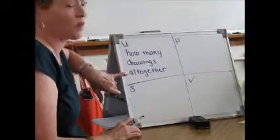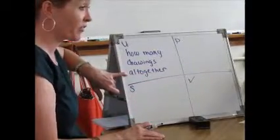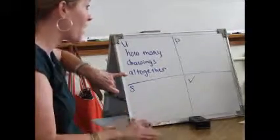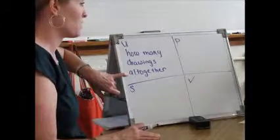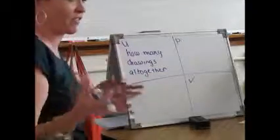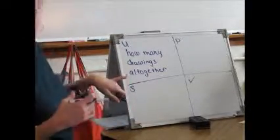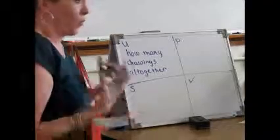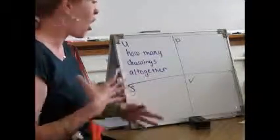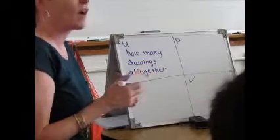Now when we see the word 'all together,' are we always going to add? No. It can mean different things, right? It can mean to multiply. It can mean to do nothing — it doesn't have anything to do with the word itself. But usually it will mean to add. Today we're going to find out what 'all together' means because we've got to find out from all the drawings.